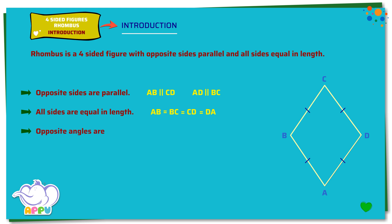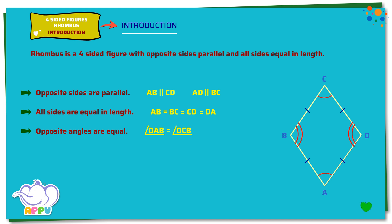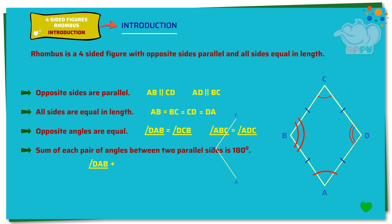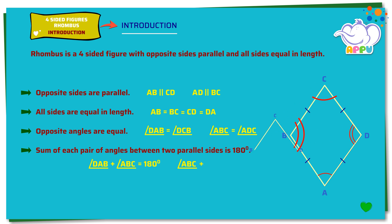Opposite angles are equal. Here, angle DAB equals angle DCB, and angle ABC equals angle ADC. The sum of each pair of angles between two parallel sides is 180 degrees. Here, angle DAB plus angle ABC equals 180 degrees. Angle ABC plus angle BCD equals 180 degrees.